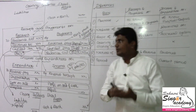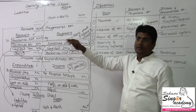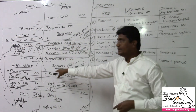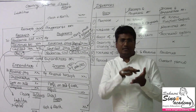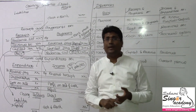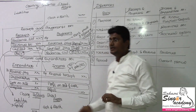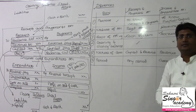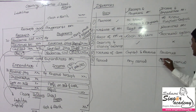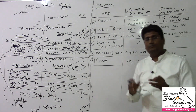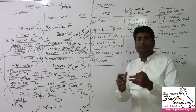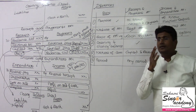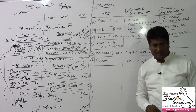The sixth difference is the period: receipts and payment may include transactions from multiple years — for example, advance payments received or made in prior or future years — whereas income and expenditure relates only to the current accounting period. So these are the six differences between receipts and payment and income and expenditure.